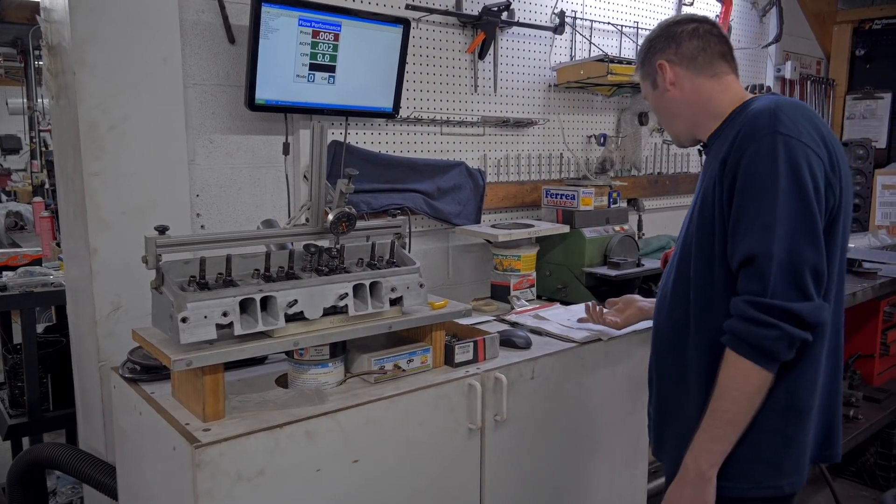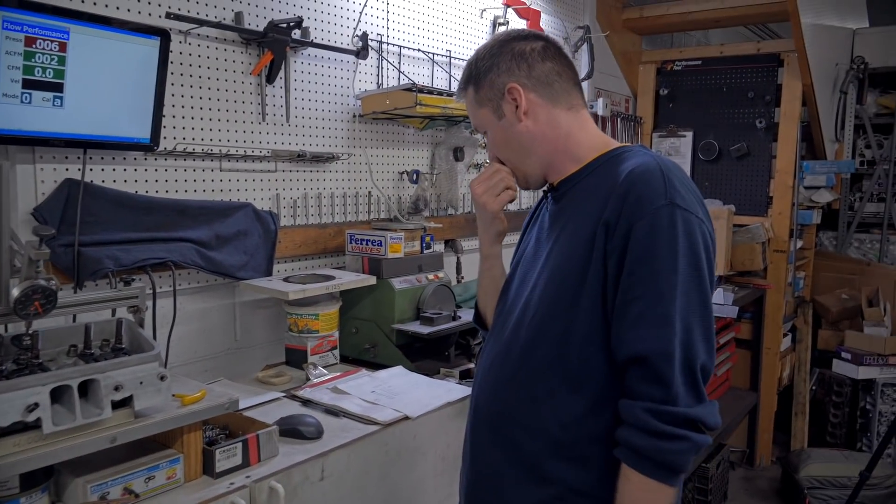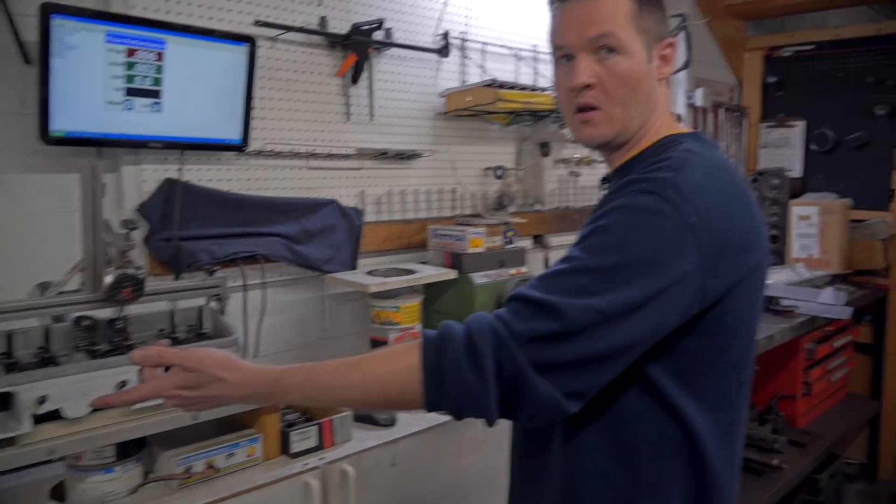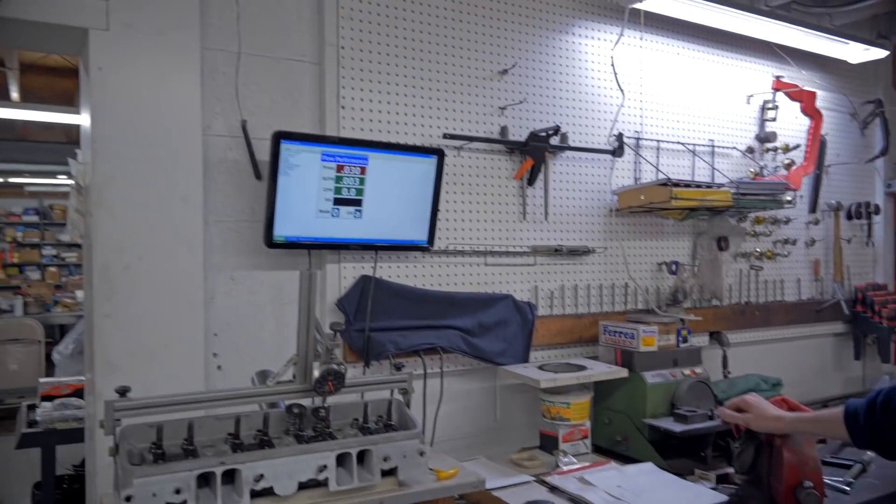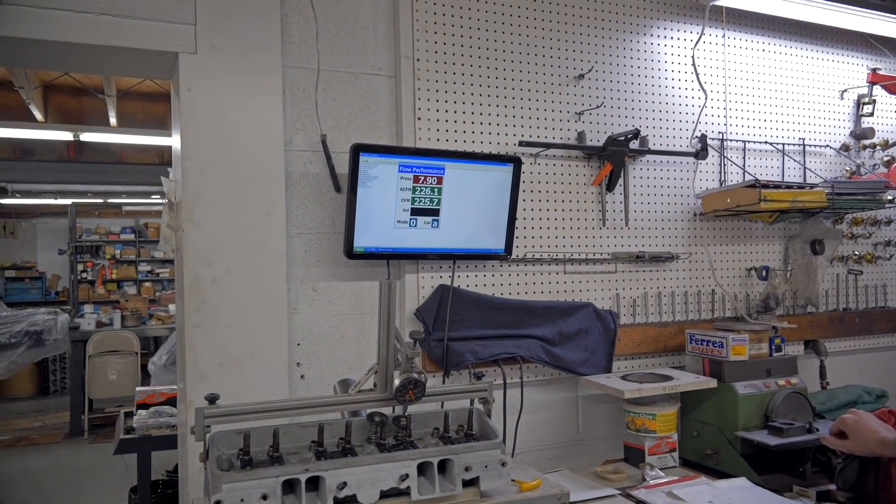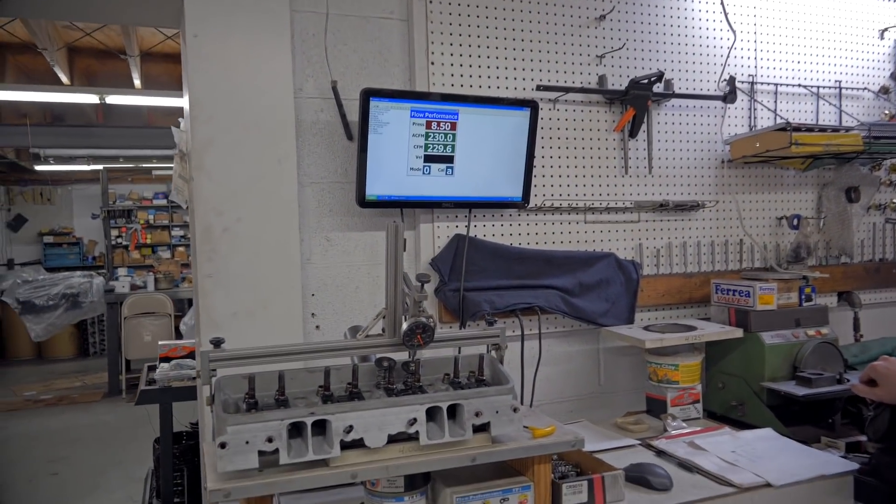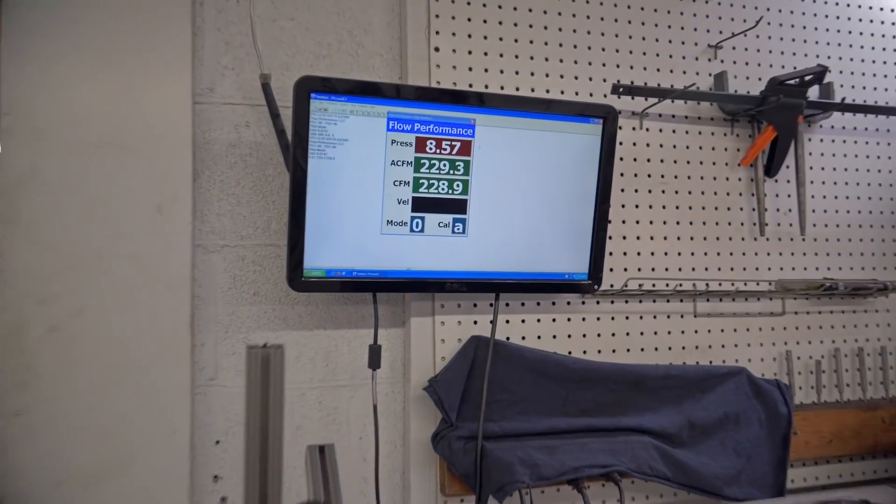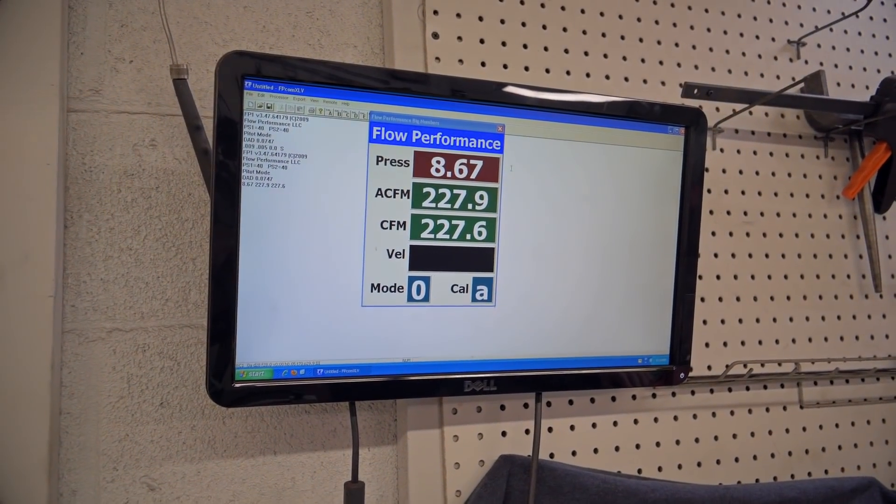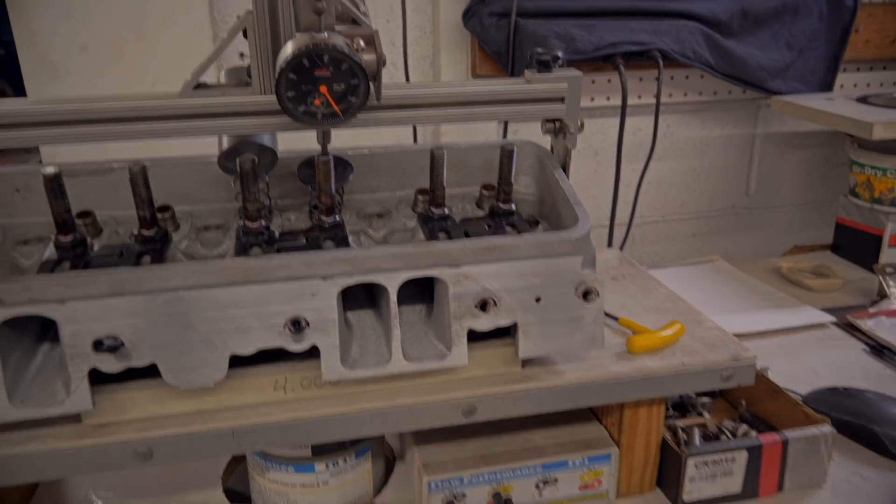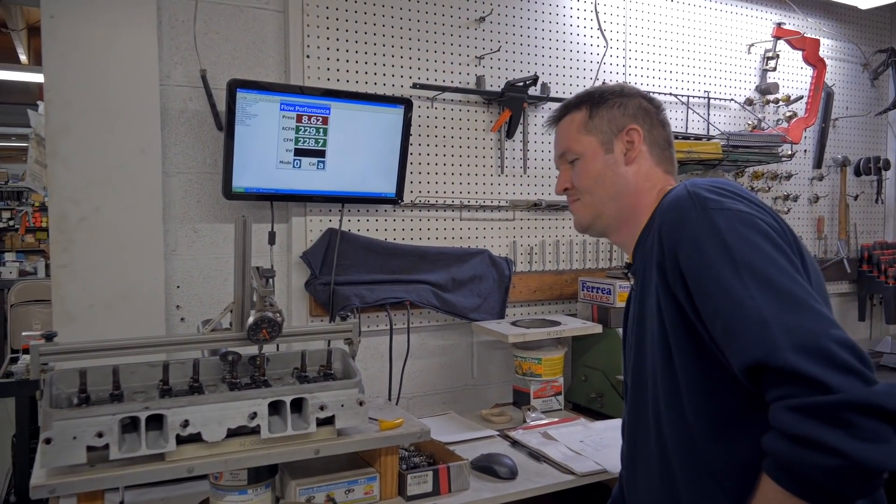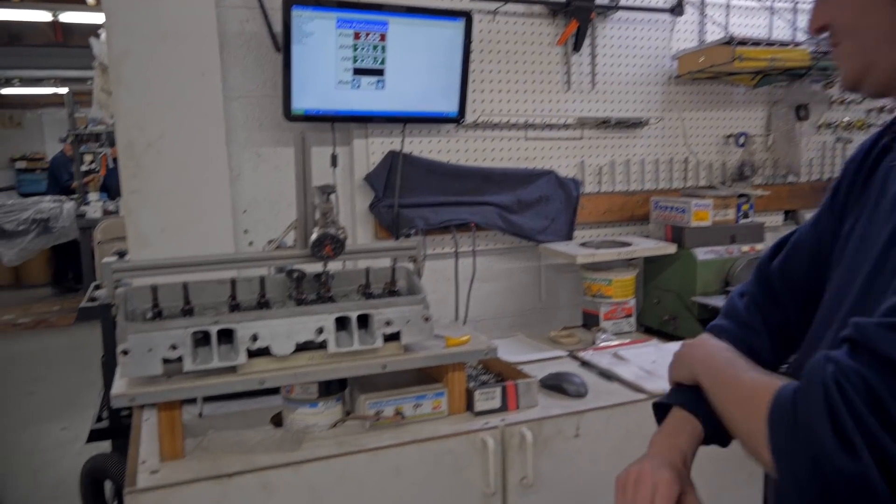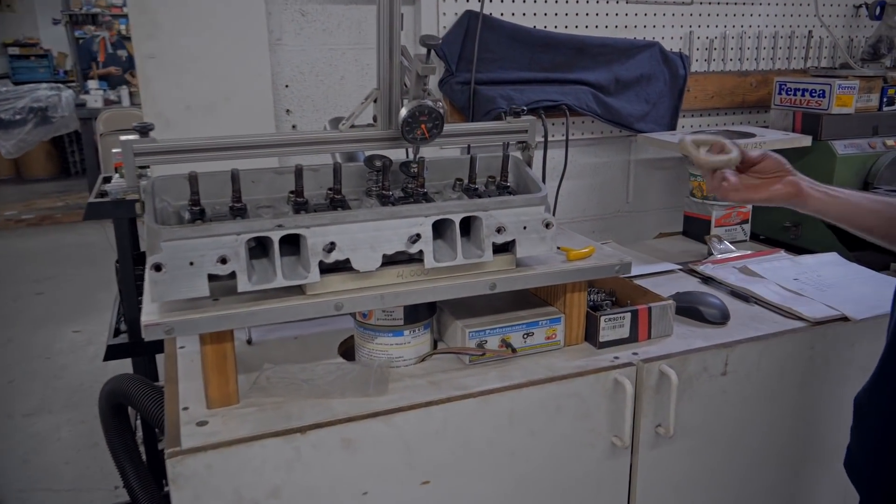So before, we were right around that 258, 259 at 500 lift when we had the clay on it like we should. So, no clay. This would be a good test. Wow, 228, 230. 30 CFM. That's huge. We're back to stock. Yeah, that's incredible. You can't flow these things without some sort of radius on them.